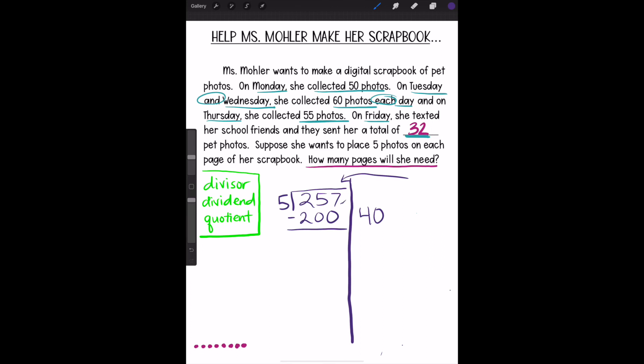7 minus 0 is 7. 5 minus 0 is 5. And 2 minus 2 is 0. All right, we still have 57 left. So we have to ask ourselves, how many groups of 5 are in 57?